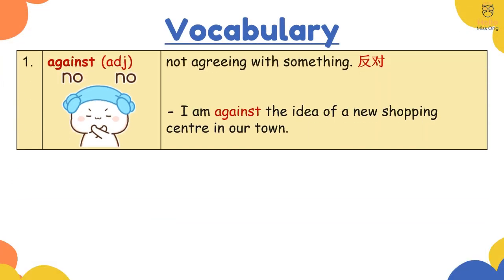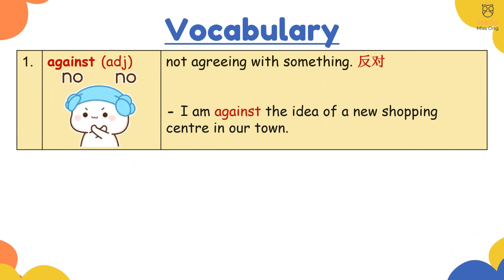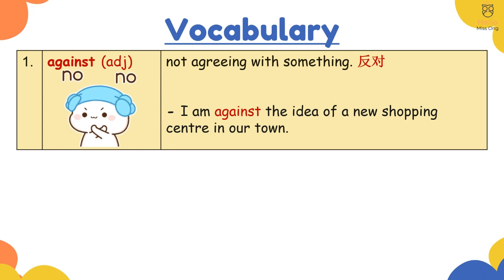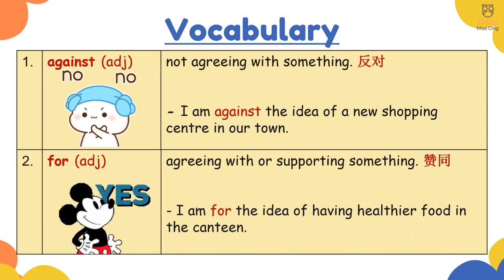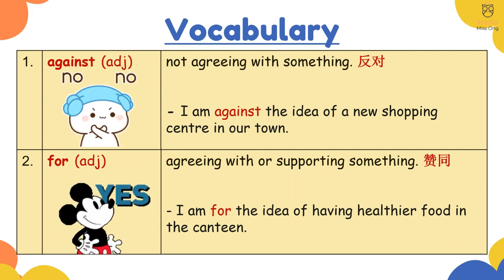Vocabulary. 'Against' means not agreeing with something. For example: I am against the idea of a new shopping center in our town. 'For' means agreeing with or supporting something.